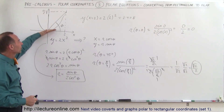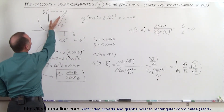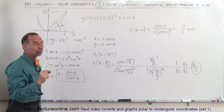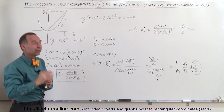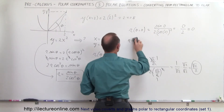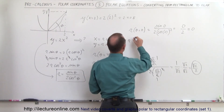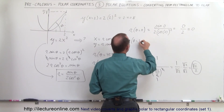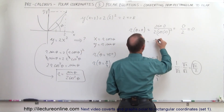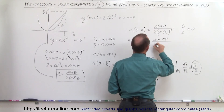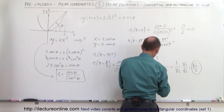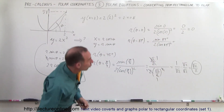What happens when the angle becomes bigger and bigger? Eventually, as the angle approaches pi over 2, r will become very, very large. For example, let's evaluate r when theta equals 89 degrees. We'll use the calculator for that: the sine of 89 degrees divided by 2 times the cosine of 89 degrees quantity squared. I think r will be actually quite large.